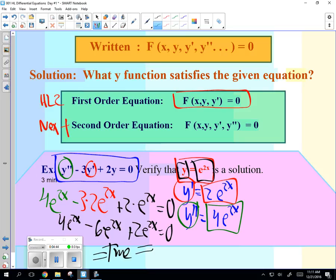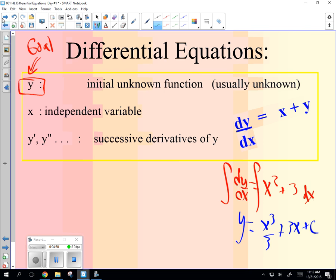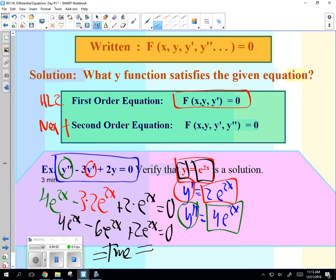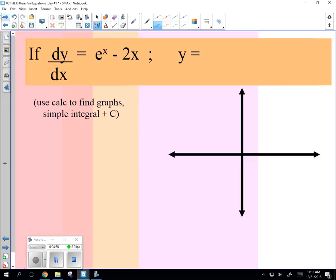Now, is this true? It is 4 e to the 2x minus 6 e to the 2x plus 2 e to the 2x. Is that equal to 0? Yeah, it's true. So all this is a technique is for verifying. It's not for actually proving. All right, next. Go to slope fields.